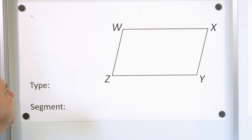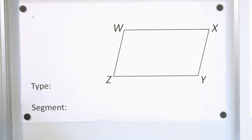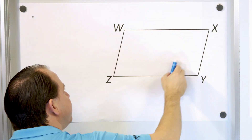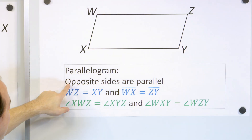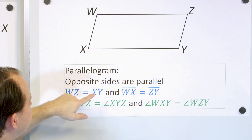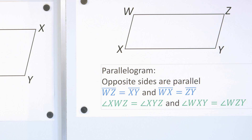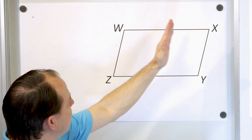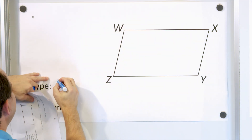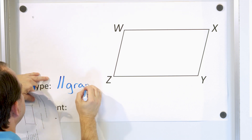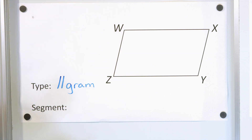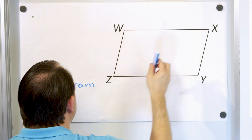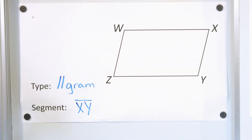First problem: here is a quadrilateral — a four-sided figure. What type of quadrilateral is it? Well, we have this side parallel to this side, and this side parallel to this side. We don't see any 90-degree angles, and we know all four sides are not equal. That is a parallelogram — a shape where opposite sides are parallel and two of the sides are equal, and the other two parallel sides are also equal. Next question: what line segment is parallel to WZ? Here's WZ — the parallel line segment has to be XY. So XY is the line segment that is parallel to WZ.